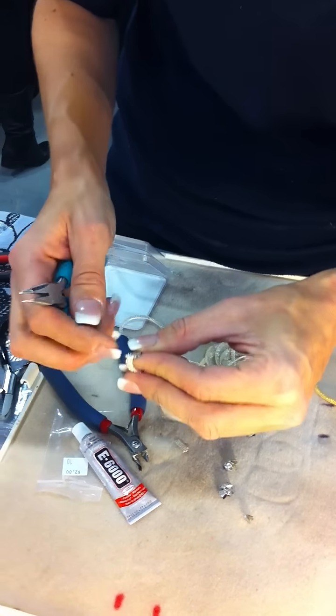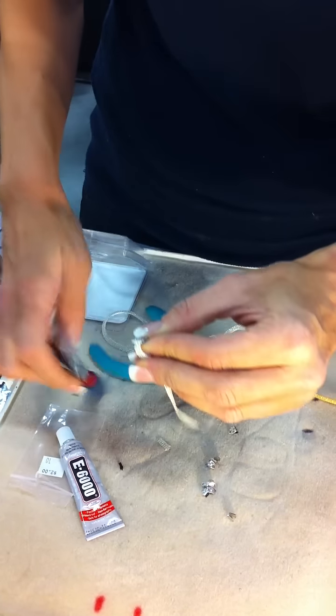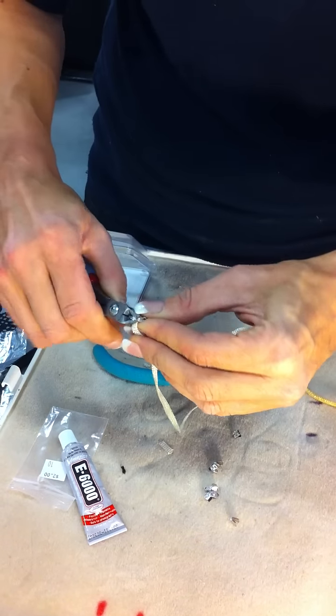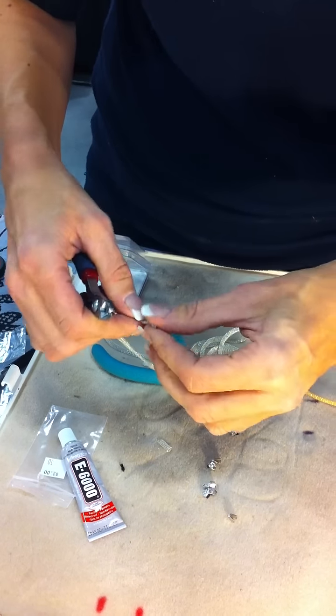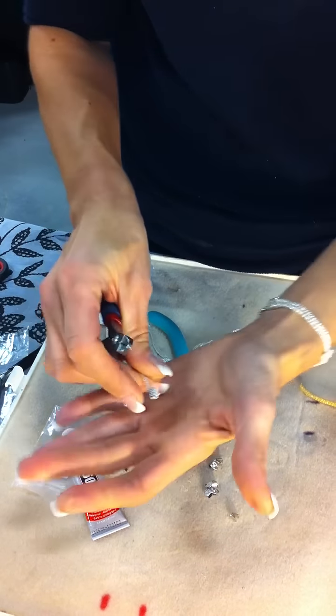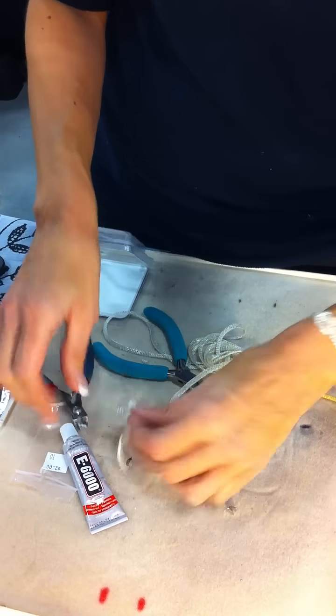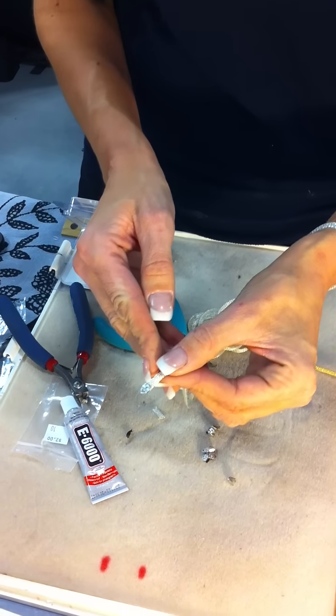With this extra piece here, I'm just going to go up real close to it and snip it off. Let your glue dry. You can tell I'm not used to having nails.